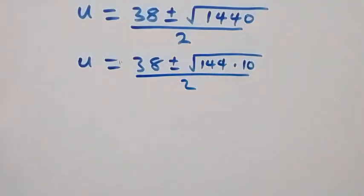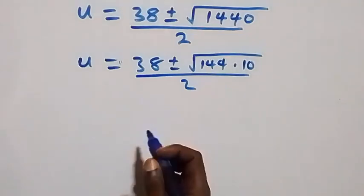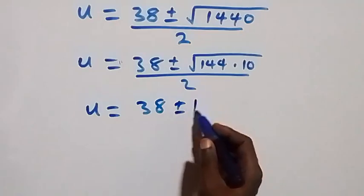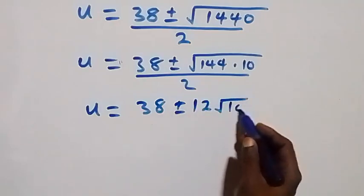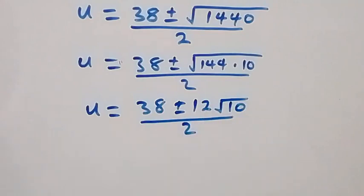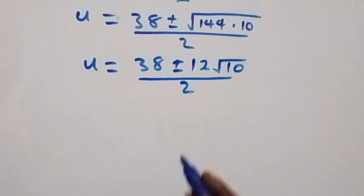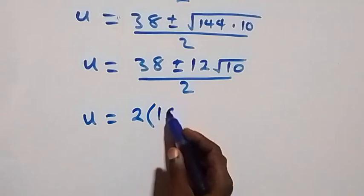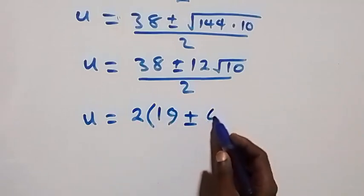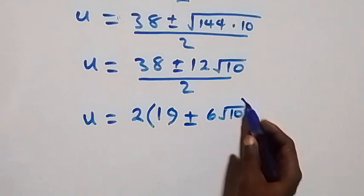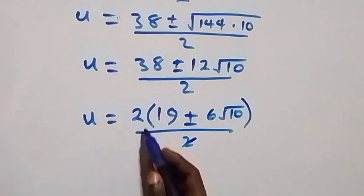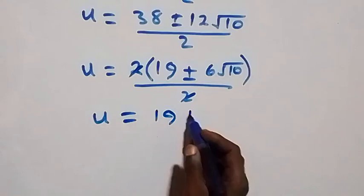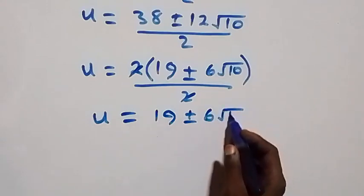We rewrite √1440 as √(144 × 10), and since √144 equals 12, we get u equals (38 ± 12√10) / 2. Factoring out 2 gives u equals 2(19 ± 6√10) / 2, which simplifies to u equals 19 ± 6√10.